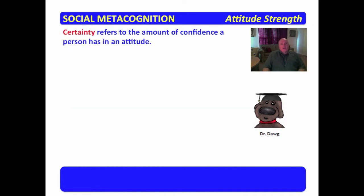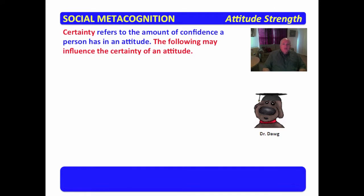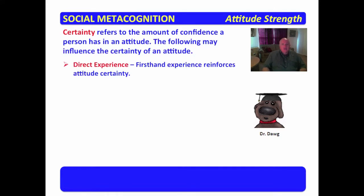Certainty refers to the amount of confidence a person has in an attitude — whether the person views the attitude as valid or correct. The following may influence the certainty of an attitude: direct experience. First-hand experience reinforces attitude certainty. If you have experienced something that has molded your attitudes, then that increases the certainty that the attitude is correct.